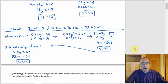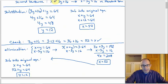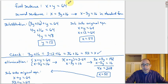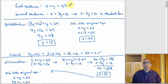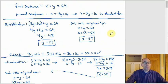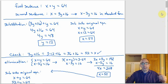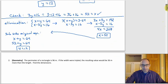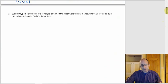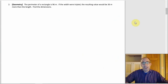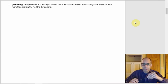For the geometry problem: the perimeter of a rectangle is 96 meters, and if the width were tripled, that value would be 36 meters more than the length. The perimeter formula is 2L plus 2W. Since that equals 96, we get 2L plus 2W equals 96. For the second sentence: 3W equals L plus 36, or in standard form, negative L plus 3W equals 36.